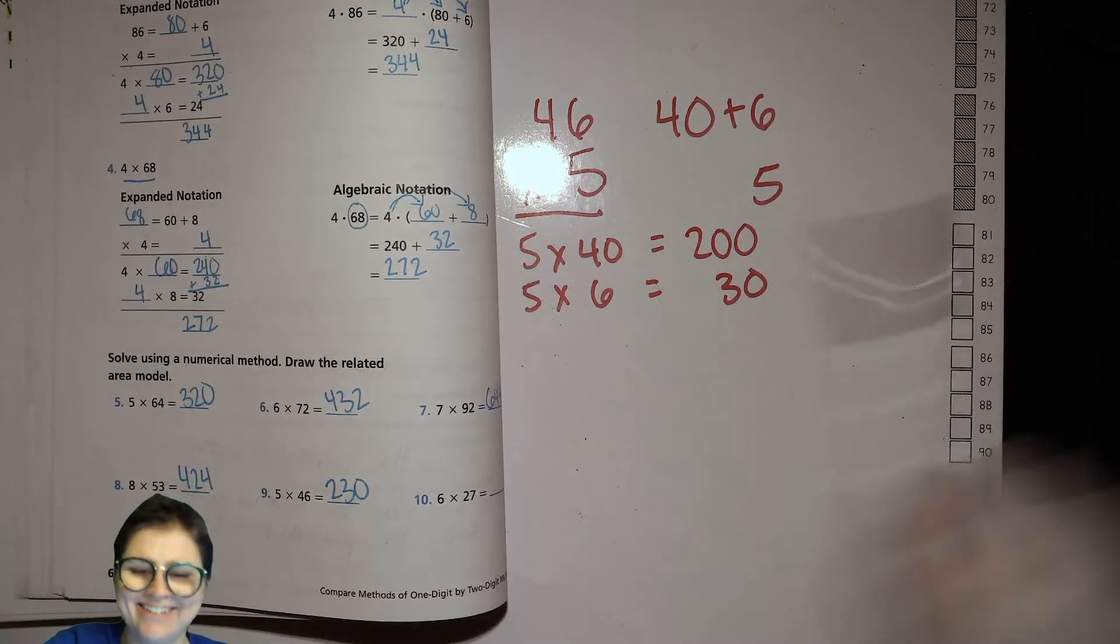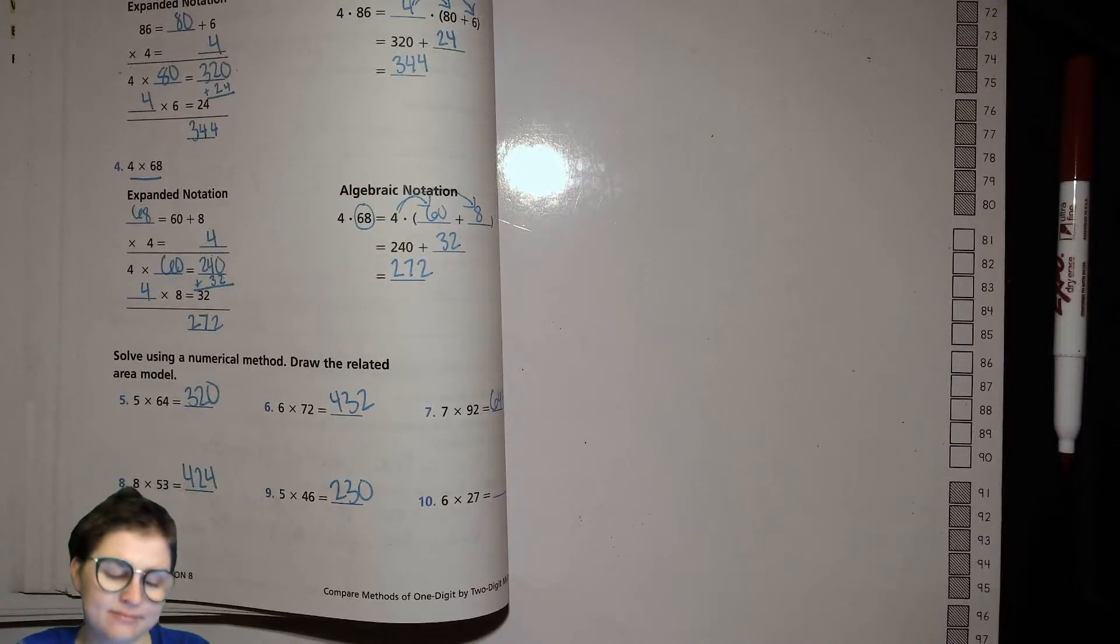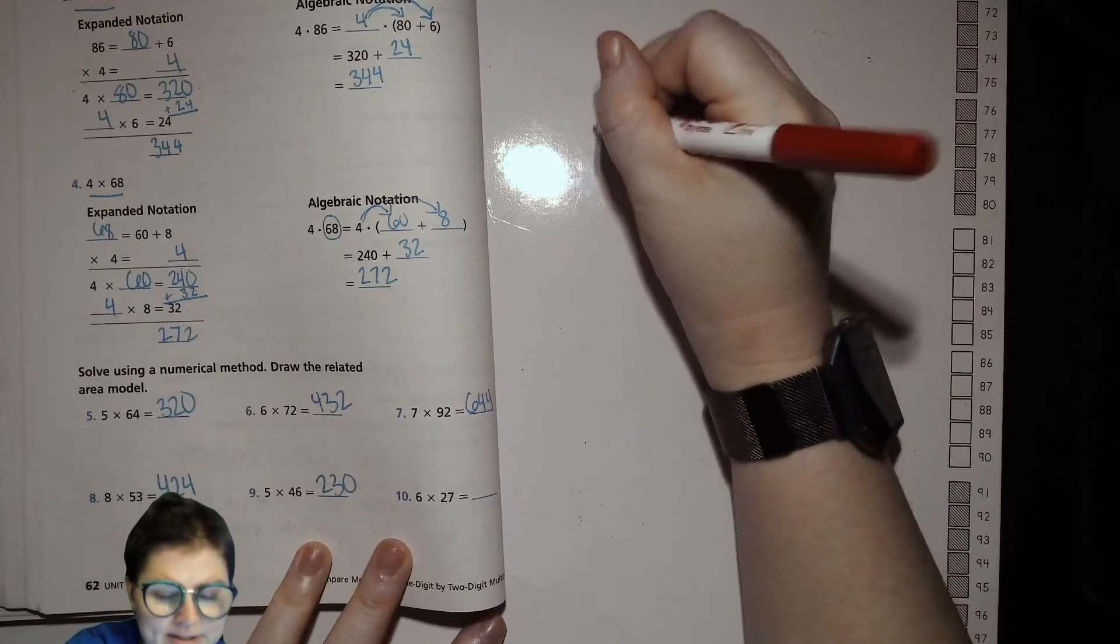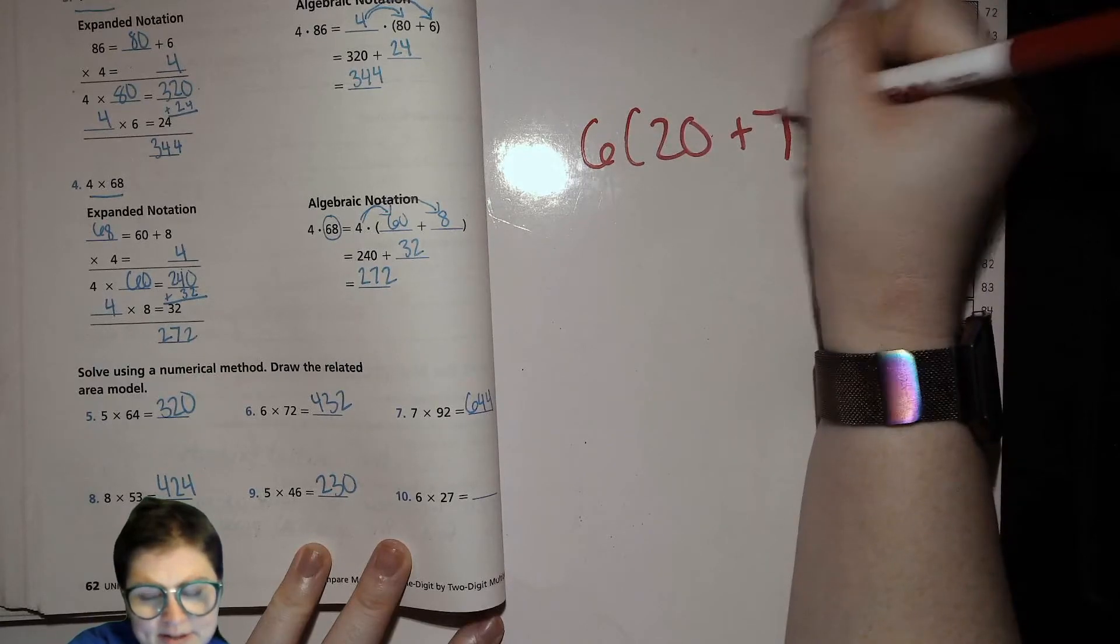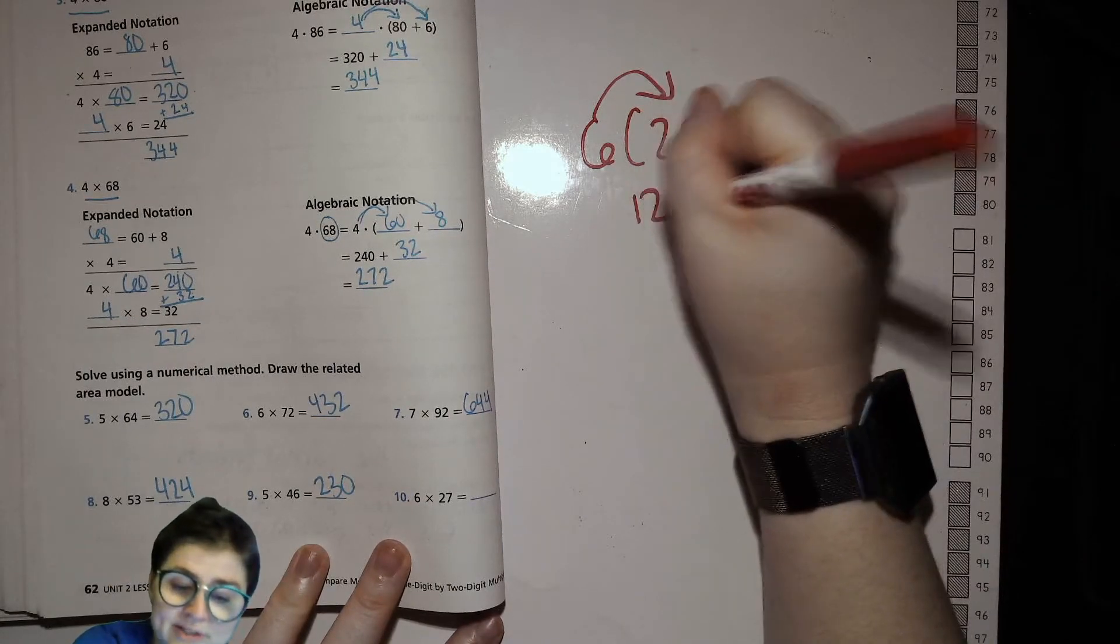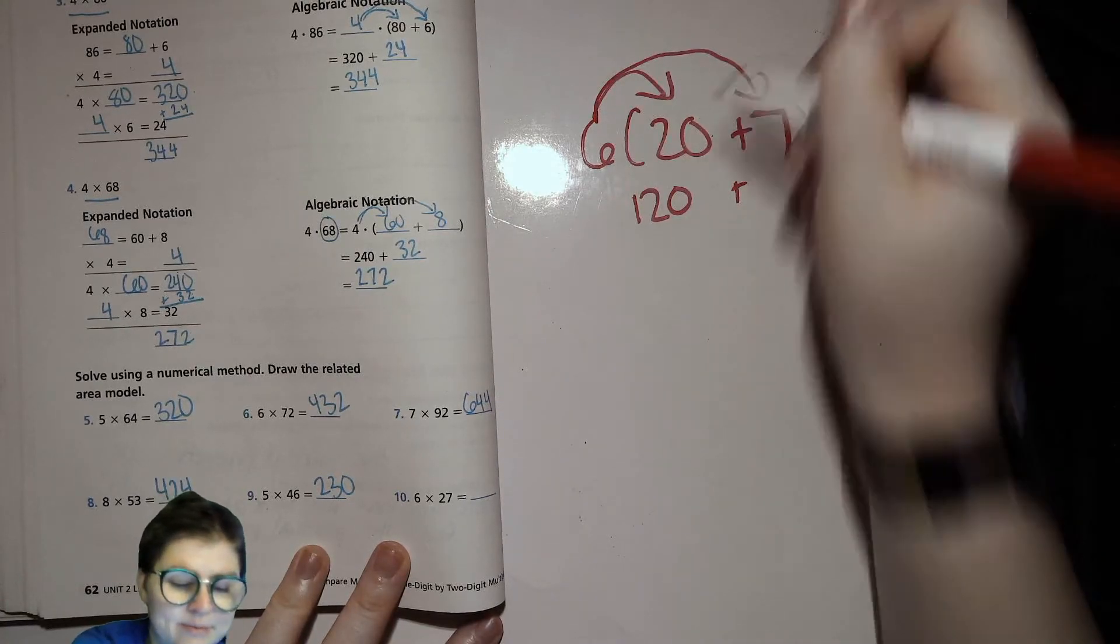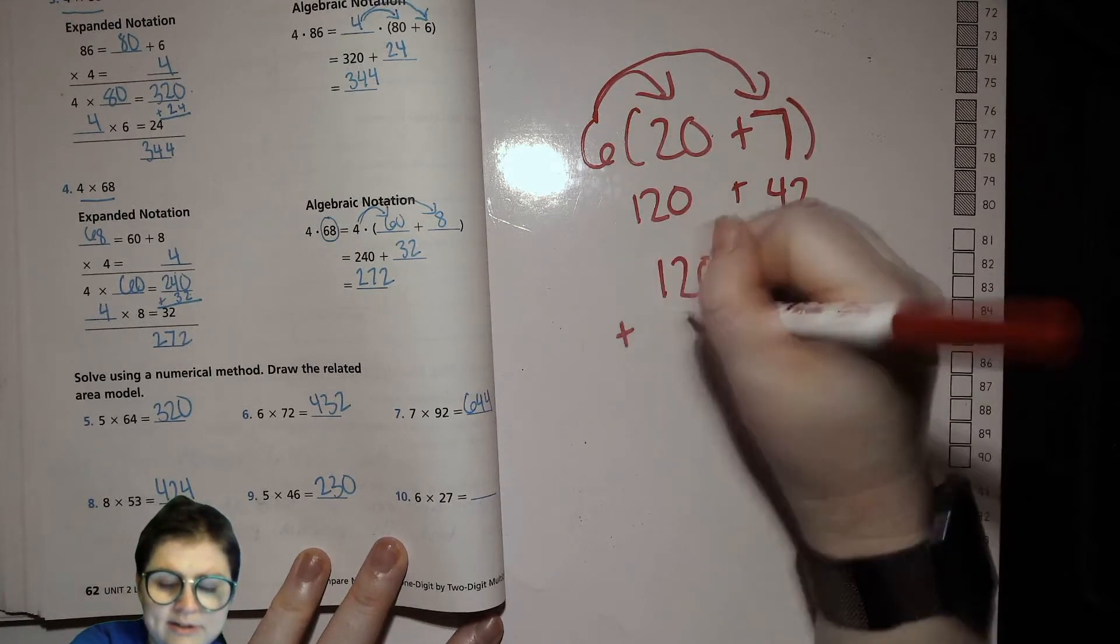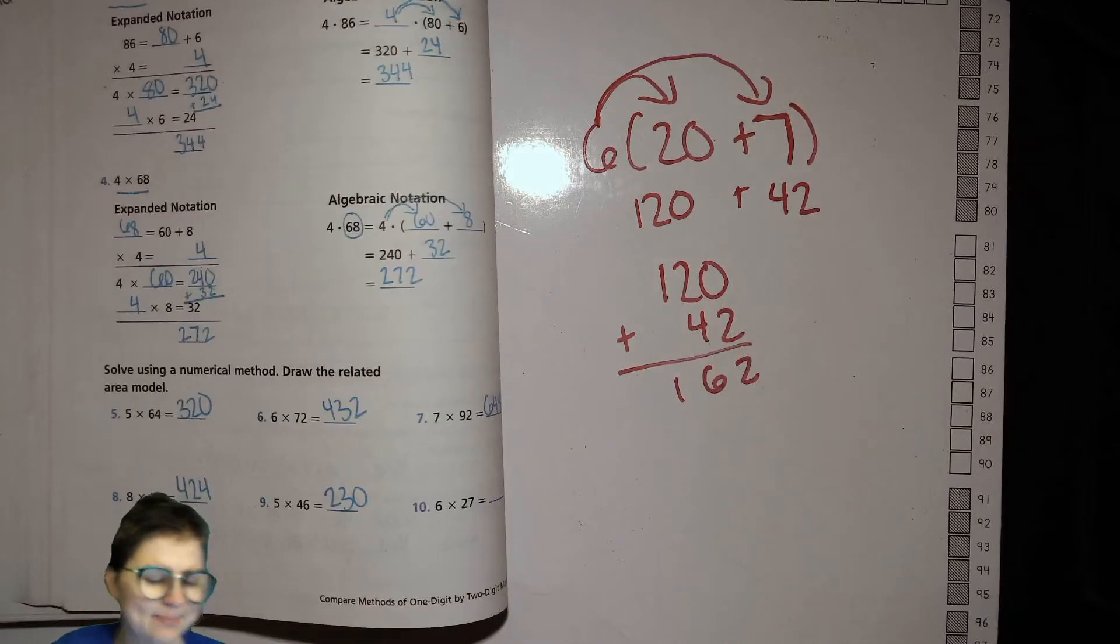Last one. Are you ready? We can do it. So 6 times 20 plus 7. 6 times 20. 6 times 2, 12. So 12 tens for 20, so 120. And then 6 times 7, that was the one we just did earlier. So 120 plus 42. 2, 6, 1. 162.